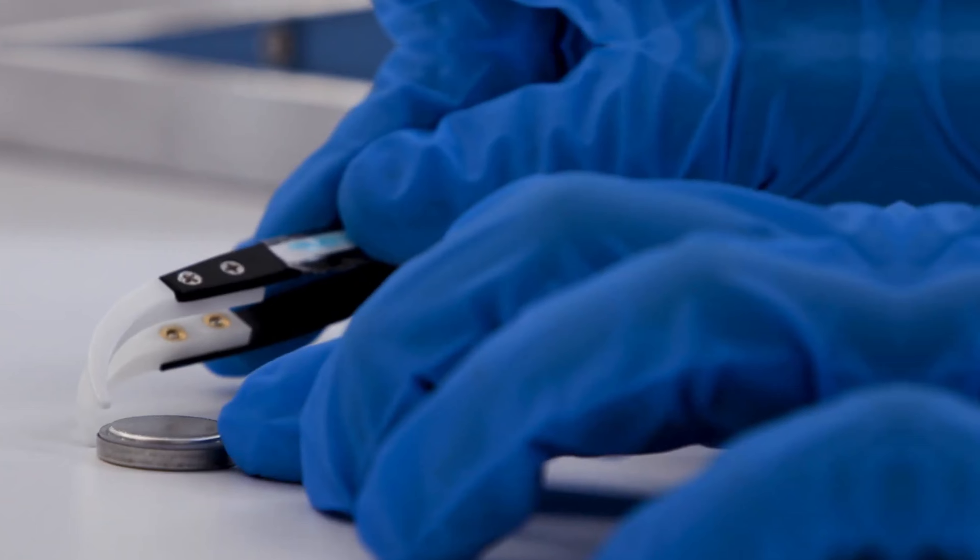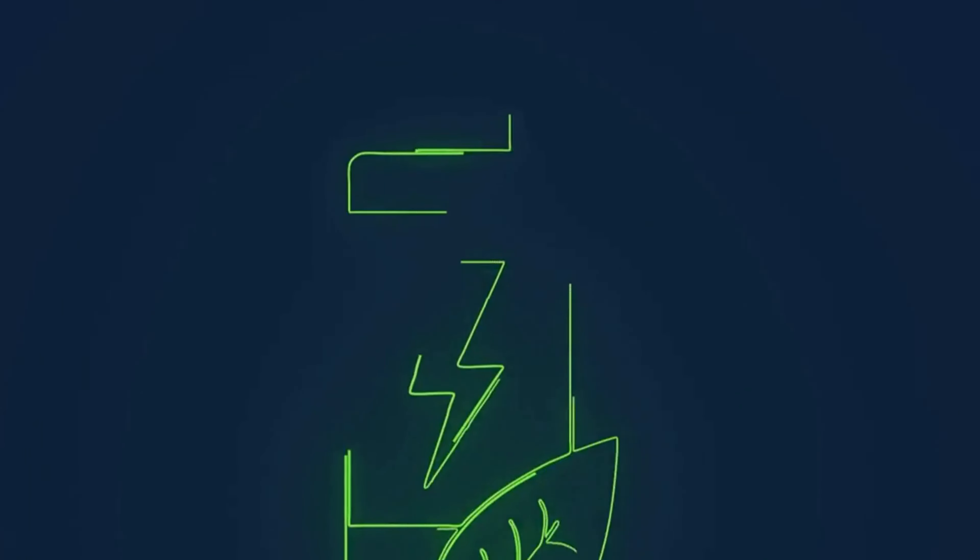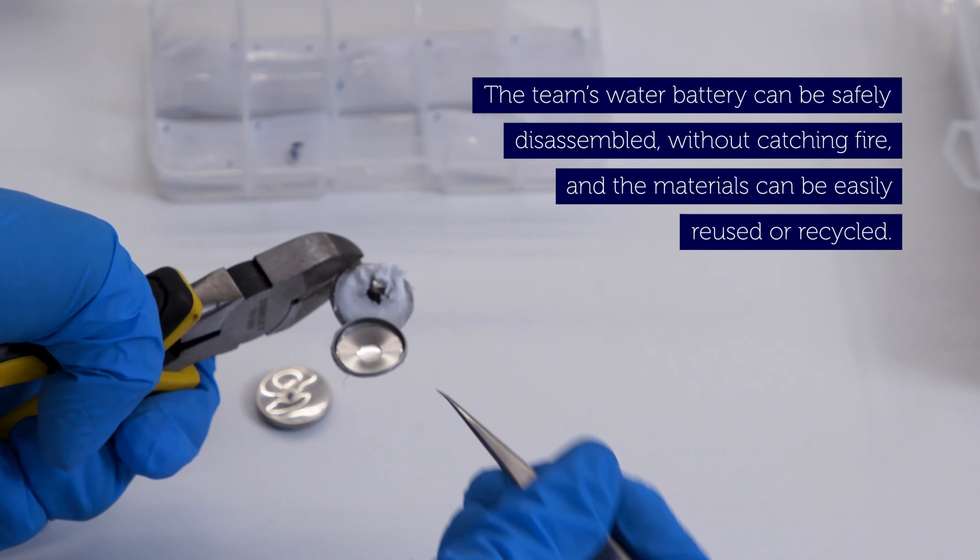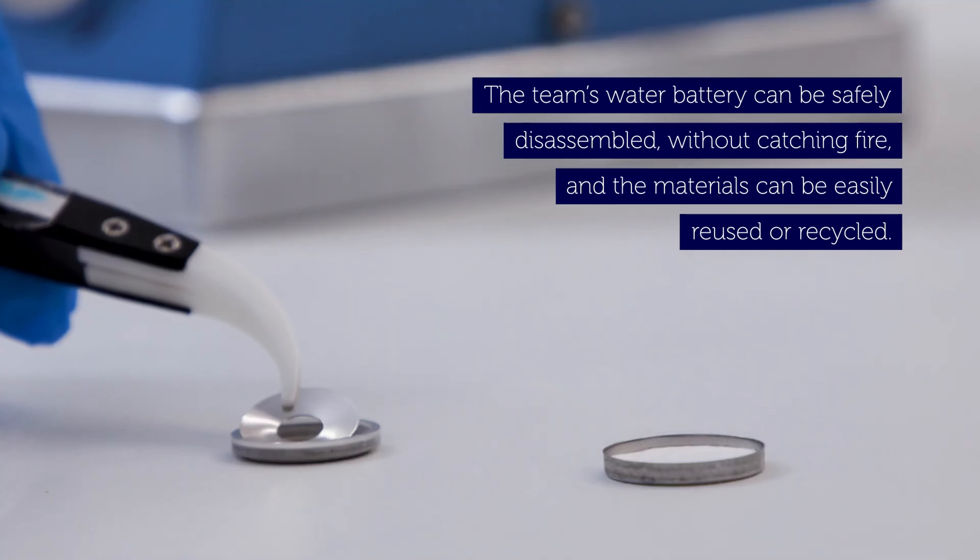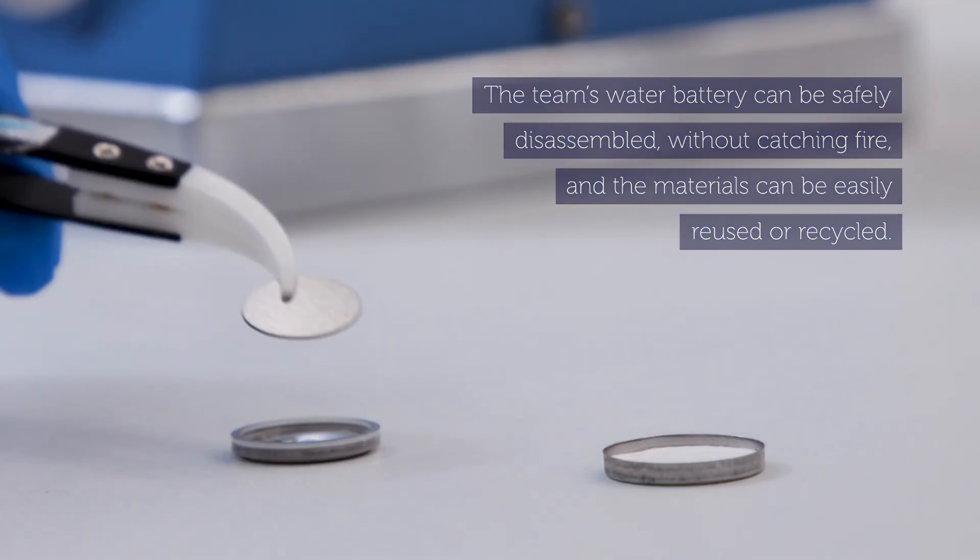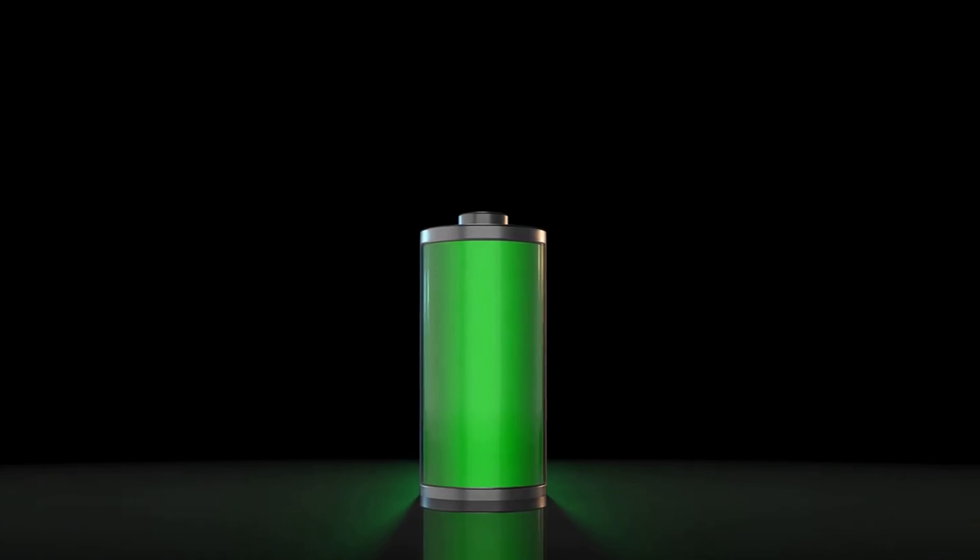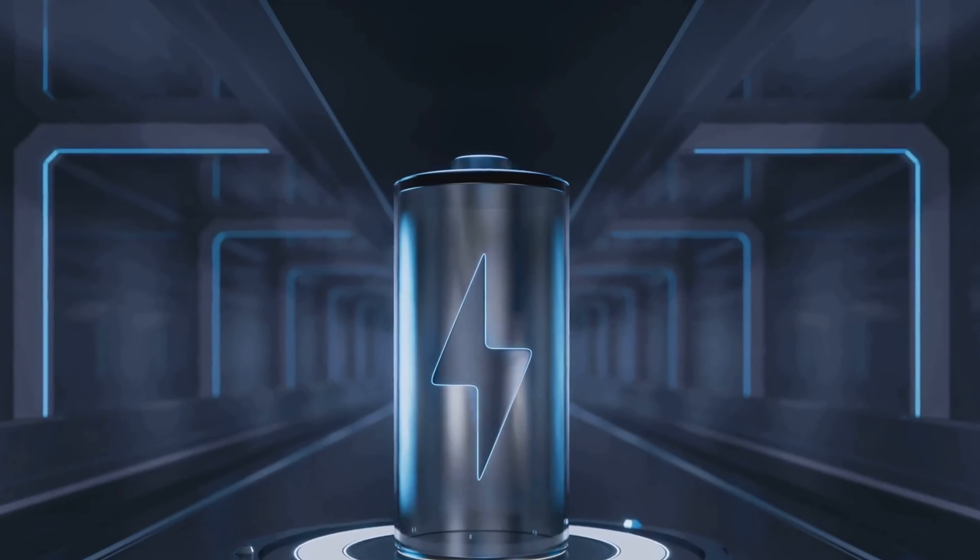These aren't your regular batteries. Instead of relying on harmful chemicals and materials, these ingenious devices harness the power of water. They are designed to store energy in a sustainable and environmentally friendly way, a refreshing shift from traditional energy storage methods. But how does it work, you might ask? Well, it's all about the ions. These batteries use metal ions in a water-based solution to store and release energy. The process is not only efficient, but also safe, as it reduces the risk of overheating and combustion common in traditional batteries.